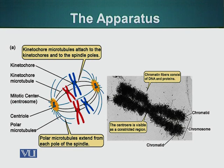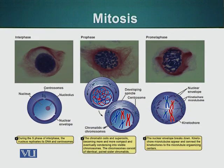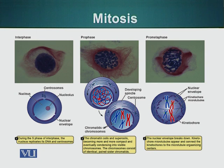Let's look at the phases of this process. At interphase, cells have basically replicated their DNA during the S phase but have not proceeded to mitosis. The nuclear envelope is intact, the centrosomes have divided, and the DNA inside the nucleus has also divided.